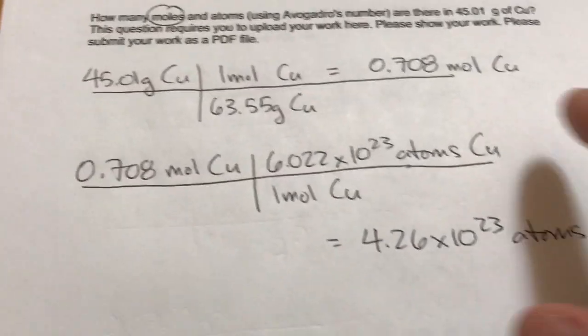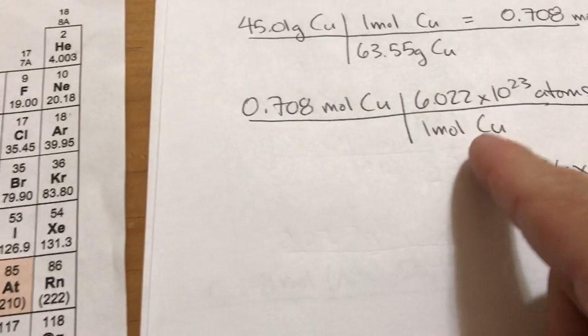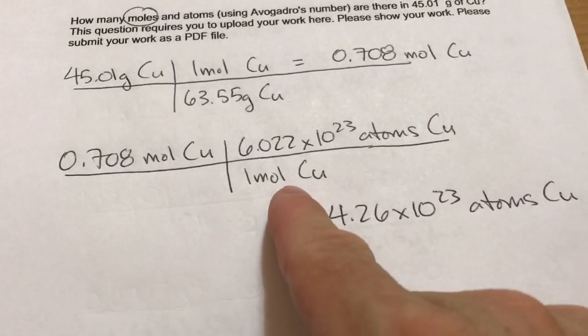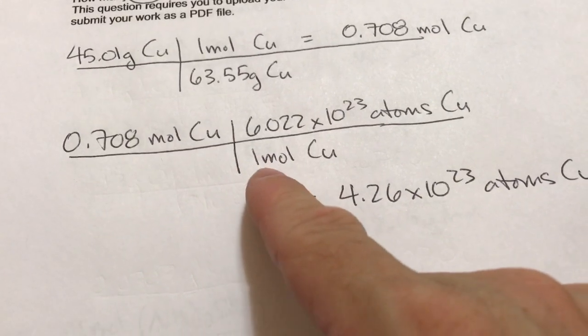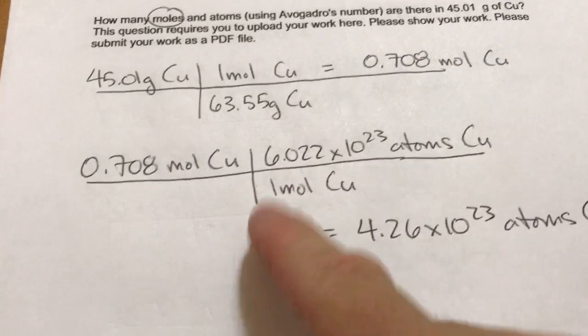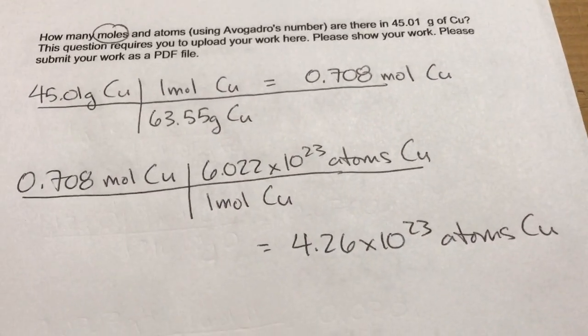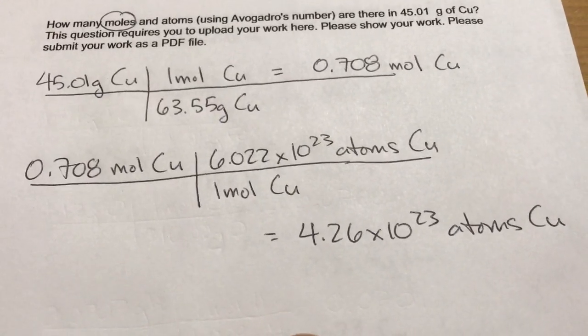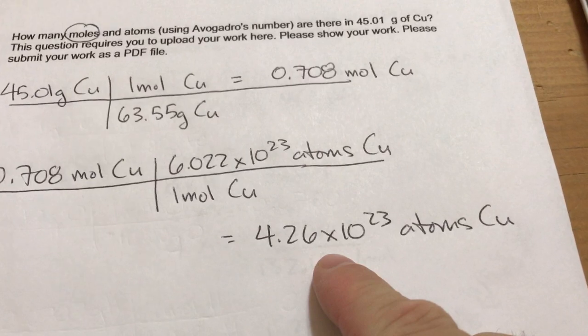And from there I took this 0.708 moles and I used Avogadro's number, because Avogadro's number is one mole of copper, since copper is an atom, is equal to 6.022 times 10 to the 23rd atoms of copper. And when I multiply these two numbers together I get 4.26 times 10 to the 23rd atoms of copper.